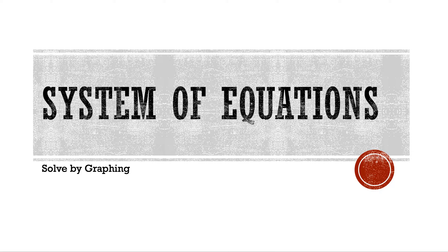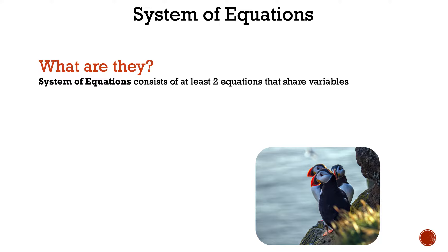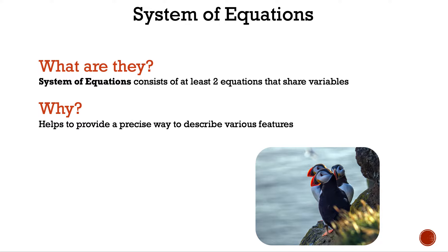System of equations, solved by graphing. What are they? A system of equations consists of at least two equations that share variables. Why? It helps to provide a precise way to describe various features.